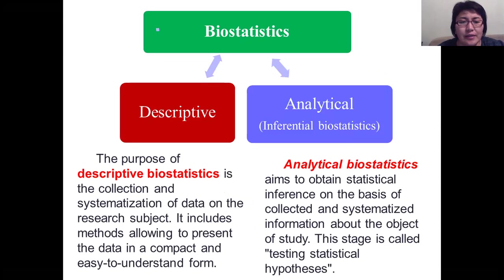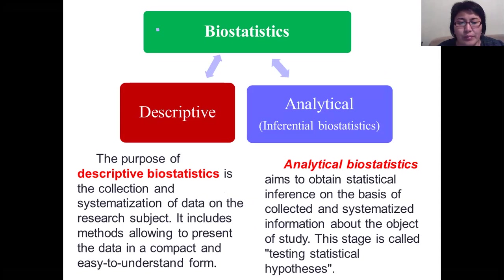Biostatistics is divided into descriptive and analytical biostatistics. The purpose of descriptive biostatistics is the collection and systematization of data on the research subject. It includes methods allowing presentation of data in a compact and easy-to-understand form. This could include tables, graphs, frequency measures, measures of central tendency, and measures of dispersion.